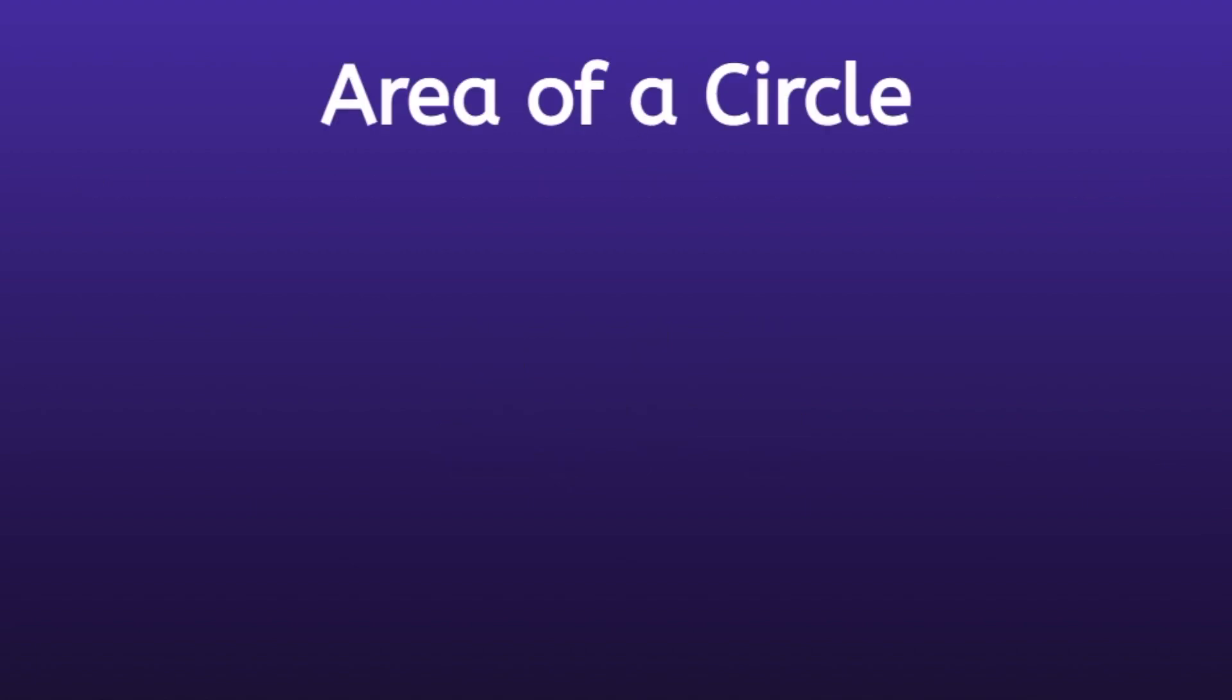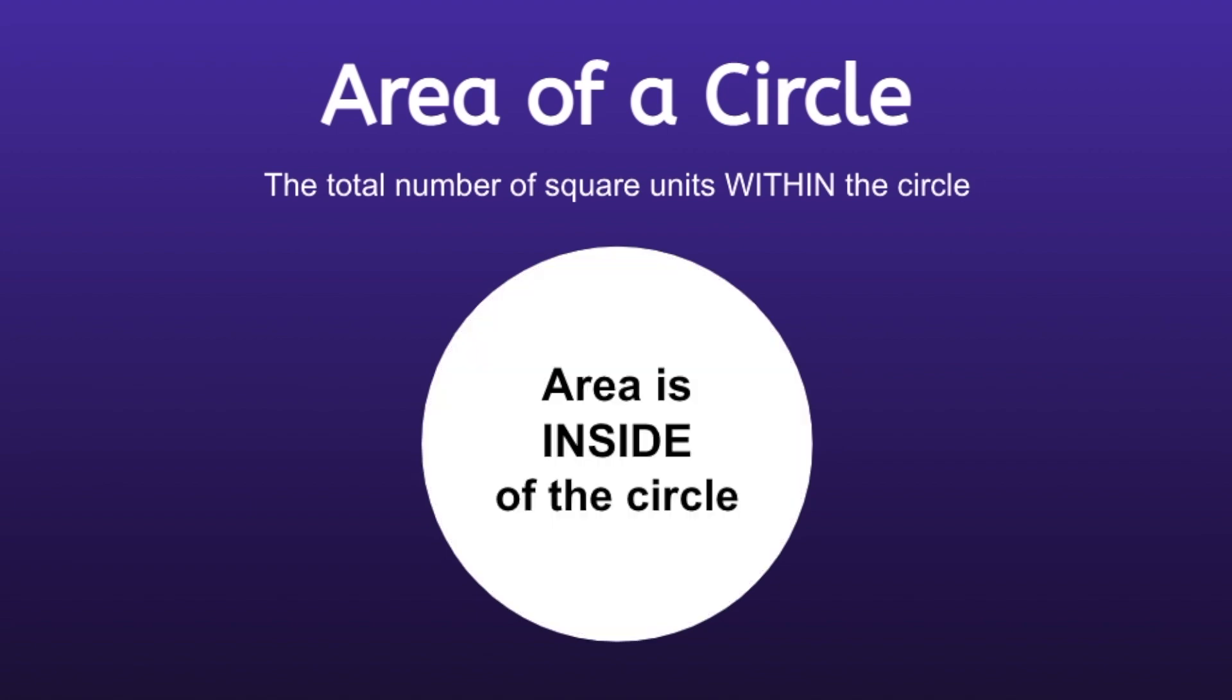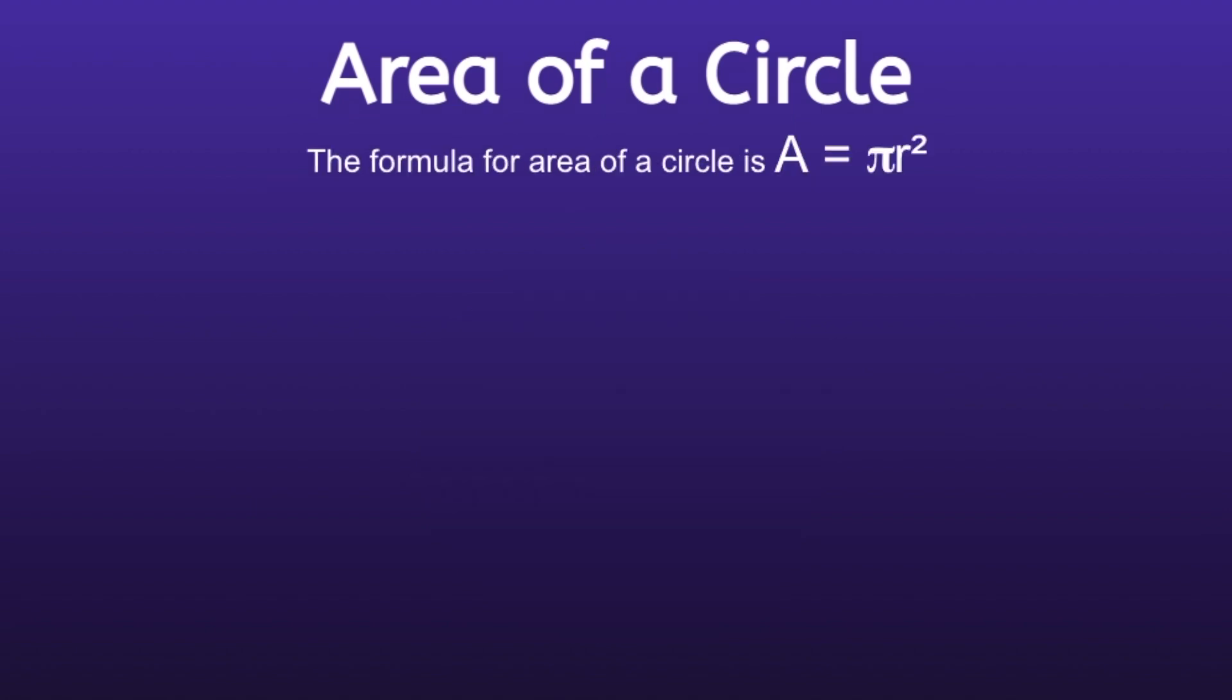Area of a circle. Area of a circle is the total number of square units within the circle. So if I was to draw a circle, the area is going to be the space inside of the circle.